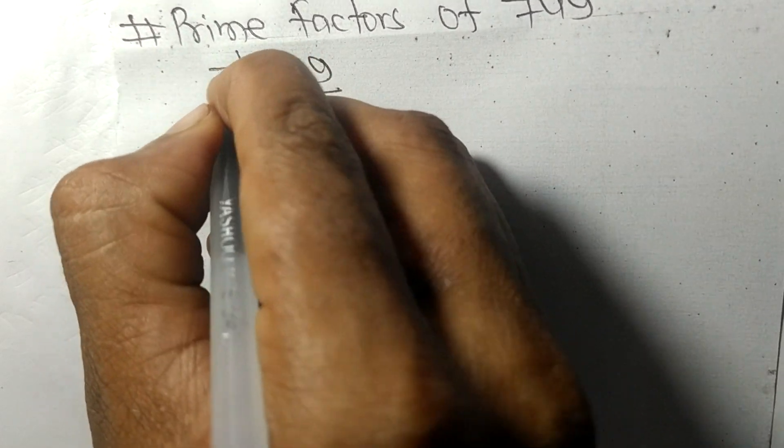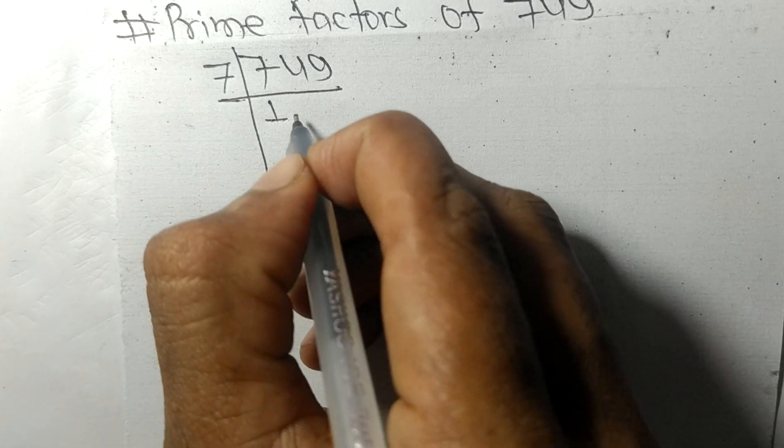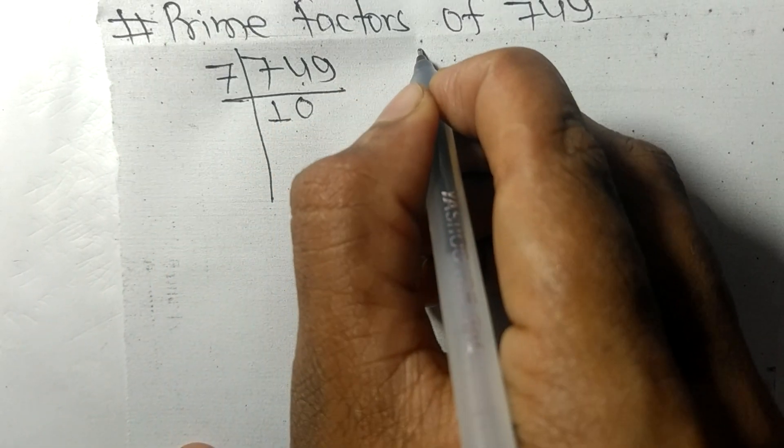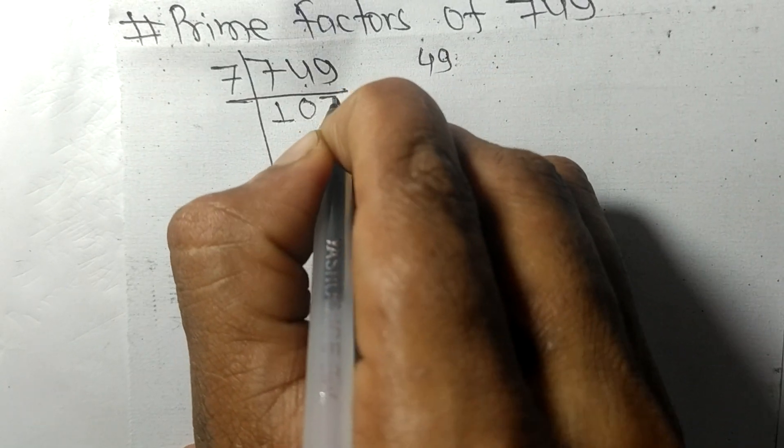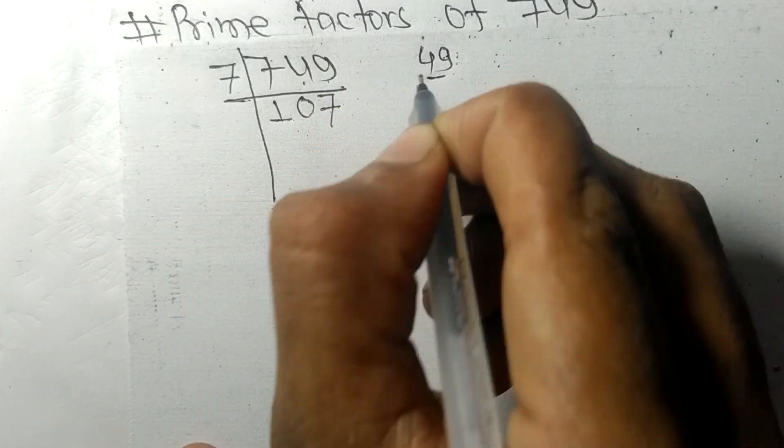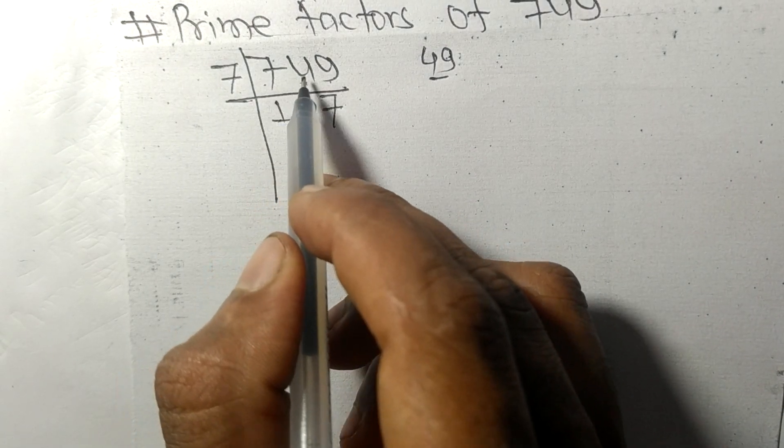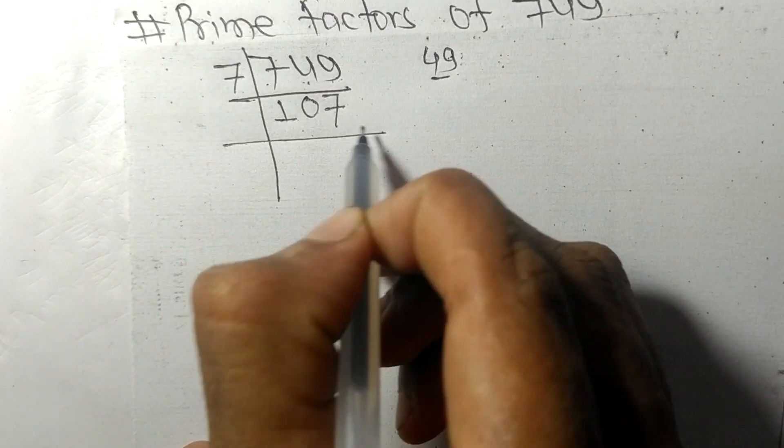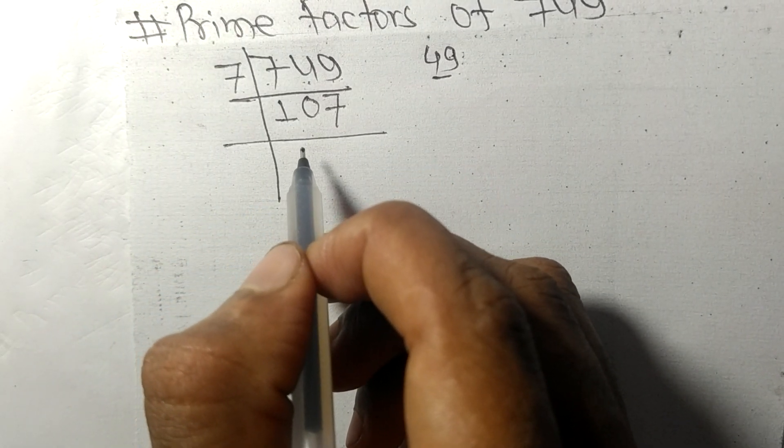7 times 1 is 7, 7 times 0 is 0. Then for 4 and 9, we have 49. 7 times 7 is 49. So on dividing 749 by 7, we get 107. Now 107 is a prime number.